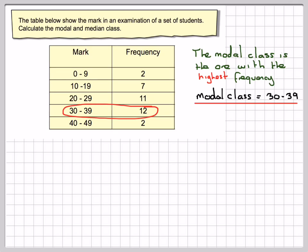For the median, remember the median is you put them in order of size and take the middle values. So first calculate the number of students. The total number of students is going to be 2 plus 7 plus 11 plus 12 plus 2, so it's 34.